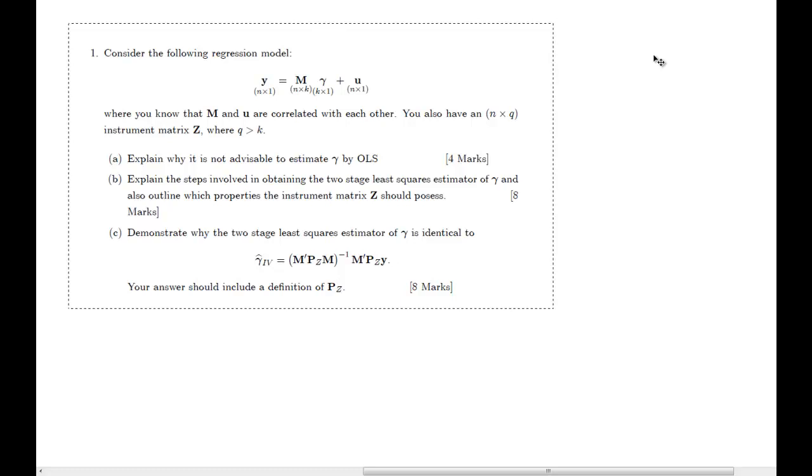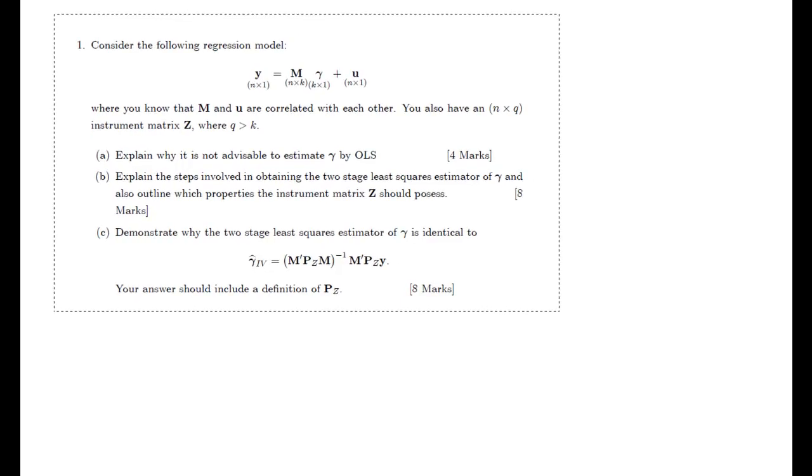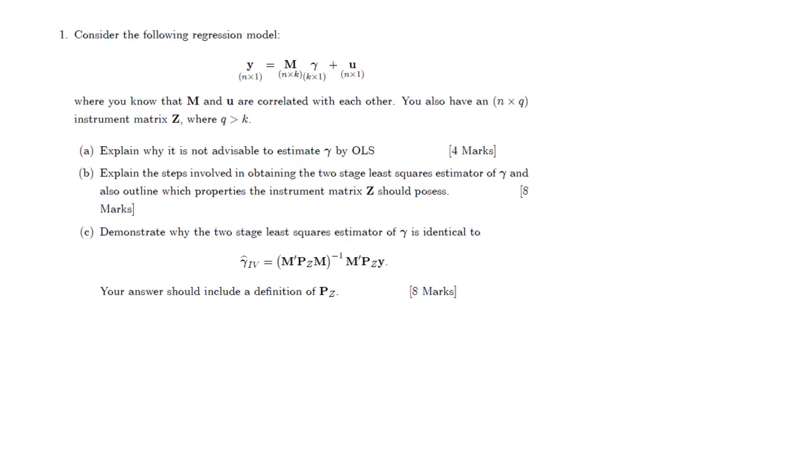It starts out with a regression model. That regression model has a dependent variable Y, K explanatory variables which are all collected in matrix M, and a coefficient vector gamma. Importantly, and that's an important piece of information, M and U are correlated with each other, and we have an instrument matrix Z.